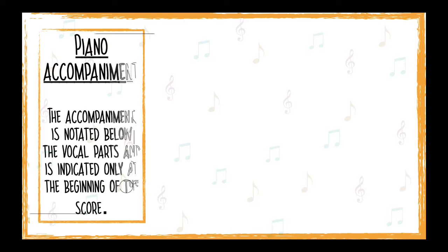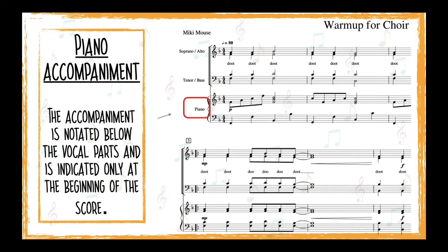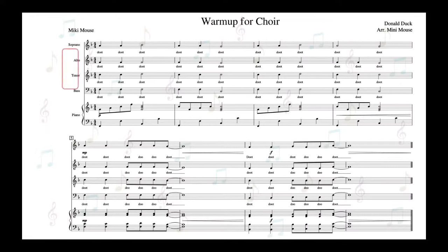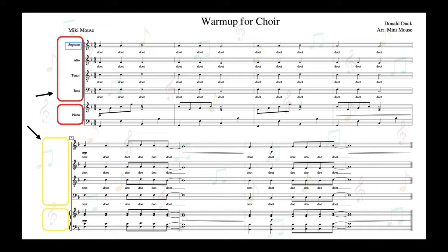If the piece that you are singing is accompanied by piano or other instruments, the accompaniment is notated on the grand staff below the vocal parts and is indicated only at the beginning of the score, just like the vocal parts. In this example, each vocal part is notated on its own staff, so the music can be easier to follow along.